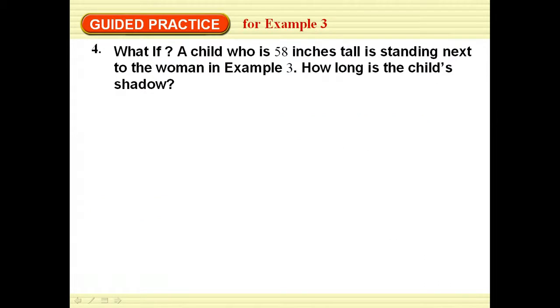What if the child is 58 inches tall and is standing next to the woman? How long is the child's shadow? We had that the woman was 64 inches and she had a 40-inch shadow. This kid is 58 inches and we're looking for its shadow, and so we do our cross-multiplication and we get 36.25.